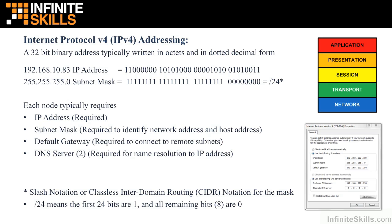An IP address is incomplete without both the IP address and its subnet mask — we don't understand anything about that node without knowing its subnet mask. So any time you statically assign an IP address to a node, you must provide at least these two pieces of information. They are essential, and the node simply will not operate without them.